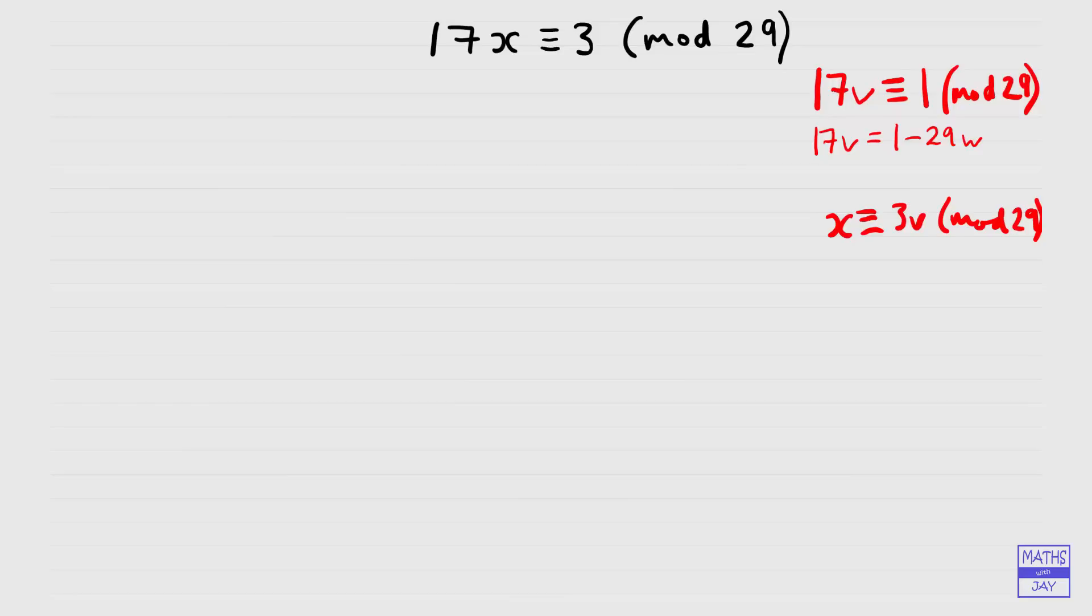So another way of writing this statement, instead of writing 17v is equal to 1 minus 29w, we could write it as 17v plus 29w is equal to 1. And that will look familiar to you if you've already looked at Euclid's algorithm and its extension, Bezout's identity. So what we're looking to do here is find v, remember that's the important thing, once we've found v we'll be able to solve our linear congruence. And we'll be able to do that by using Euclid's algorithm on the numbers 17 and 29. Now we know that 17 and 29 are co-prime, that means they don't have a common factor and that their highest common factor is 1, so in fact we know that 17v plus 29w will be equal to 1, so all will work out as it should when we use Euclid's algorithm.